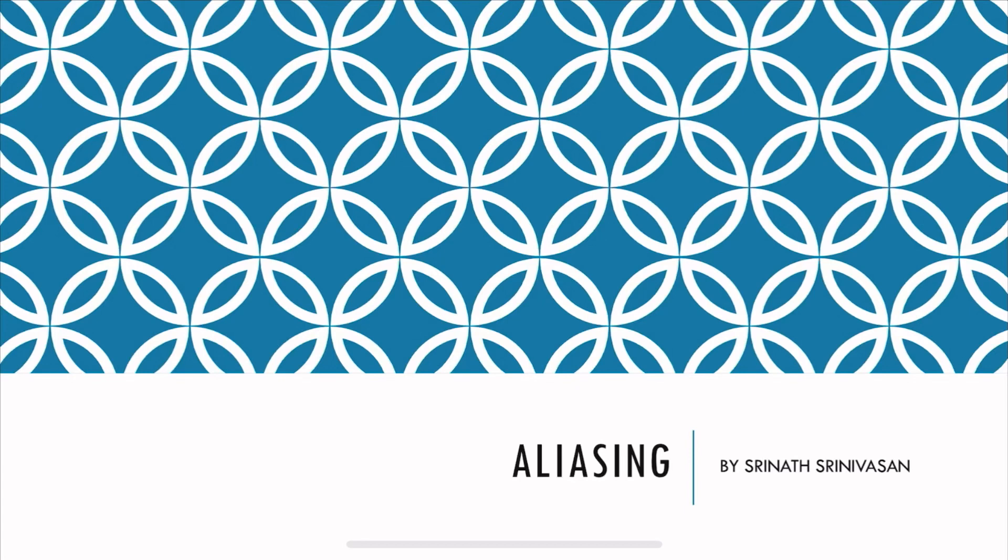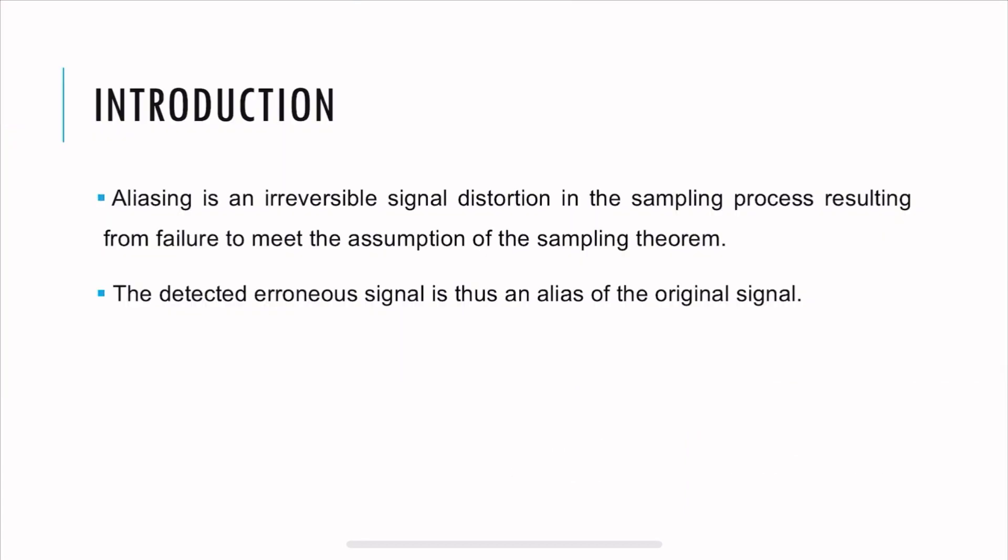Hello everybody, today we'll speak about aliasing. Aliasing is an irreversible signal distortion in the sampling process resulting from failure to meet the assumption of the sampling theorem. The detected signal is thus an alias of the original signal.